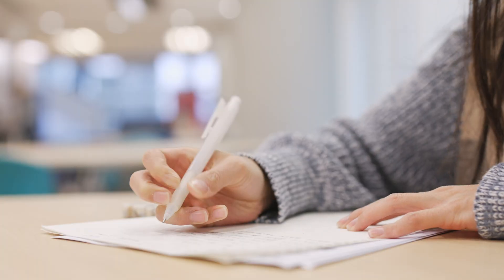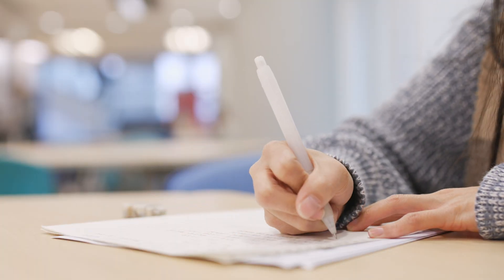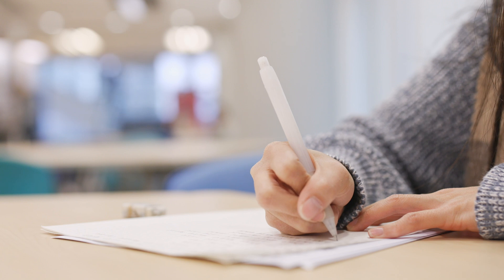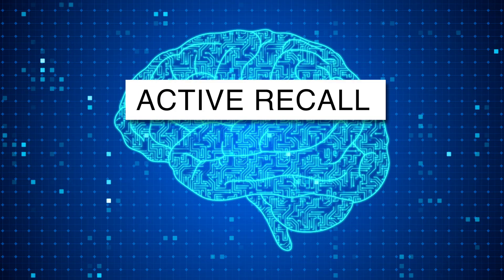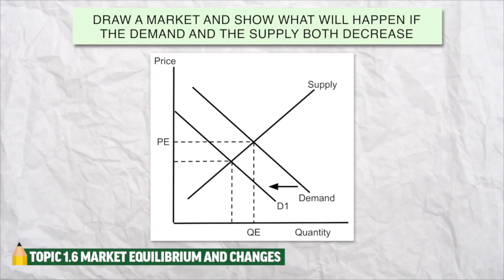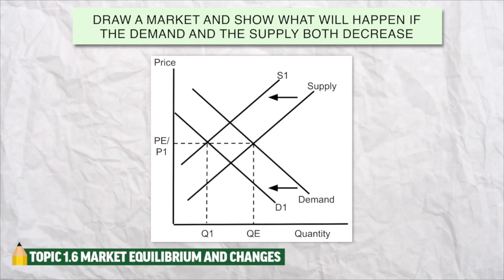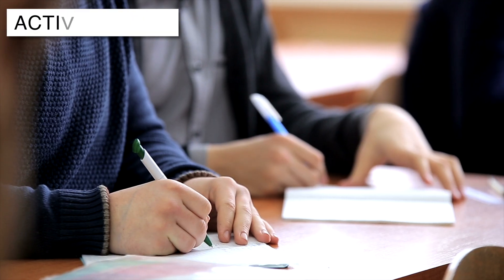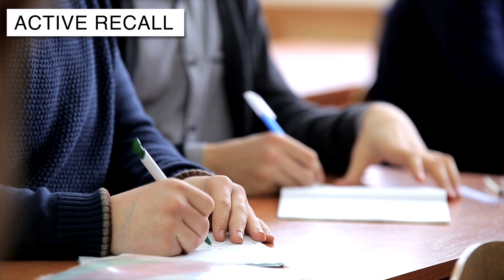According to brain research, there are two things you have to do when you study to maximize retention. Number one is active recall, and number two is spaced repetition. Watching my YouTube videos is good, but if you want to really master the material, you need active recall. This is the idea that you're not really learning unless you're doing.